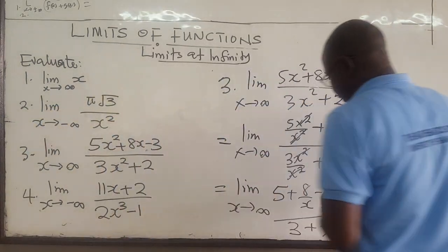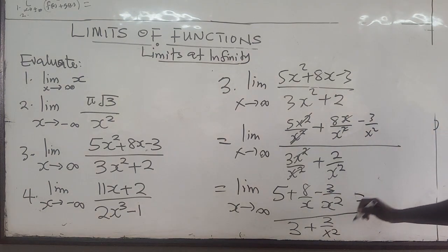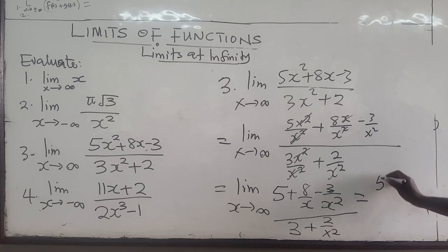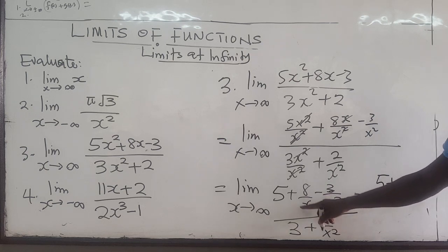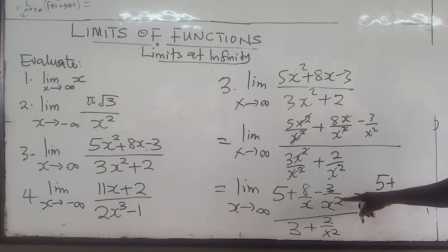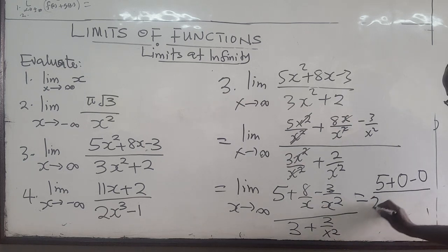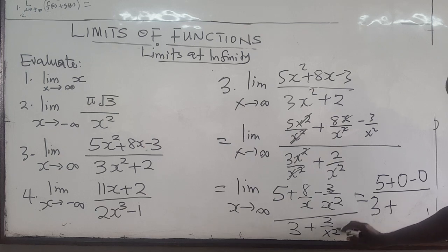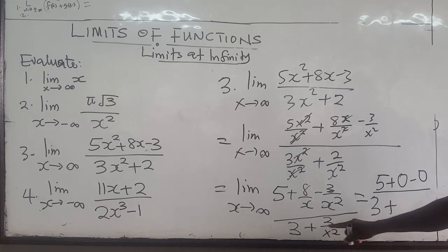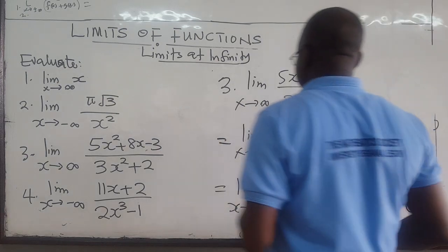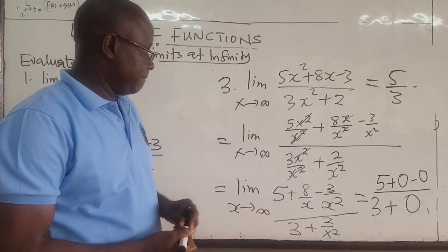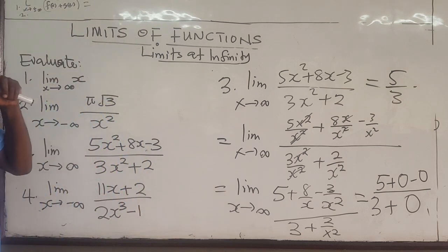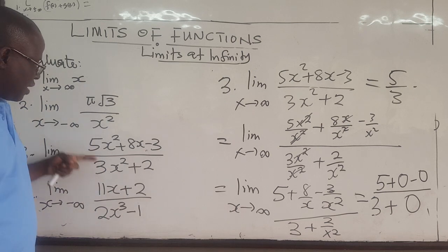This simplifies to the limit as x approaches infinity of (5 + 8/x − 3/x²) all over (3 + 2/x²). The limit of the constant 5 remains 5. The terms 8/x and 3/x² go to 0 as x→∞, and 2/x² also goes to 0. So the limit equals 5 over 3.